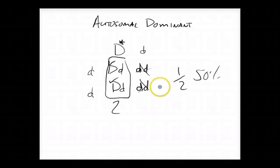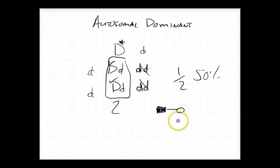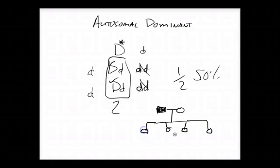Now if we're looking at a pedigree, it's going to be really simple to recognize. Let's say we take this affected person and cross them with this affected person and we get four children. This person is affected and this person is affected. So we know that it doesn't matter if they're male or female — they can equally be affected with a 50% chance of inheriting the disease.